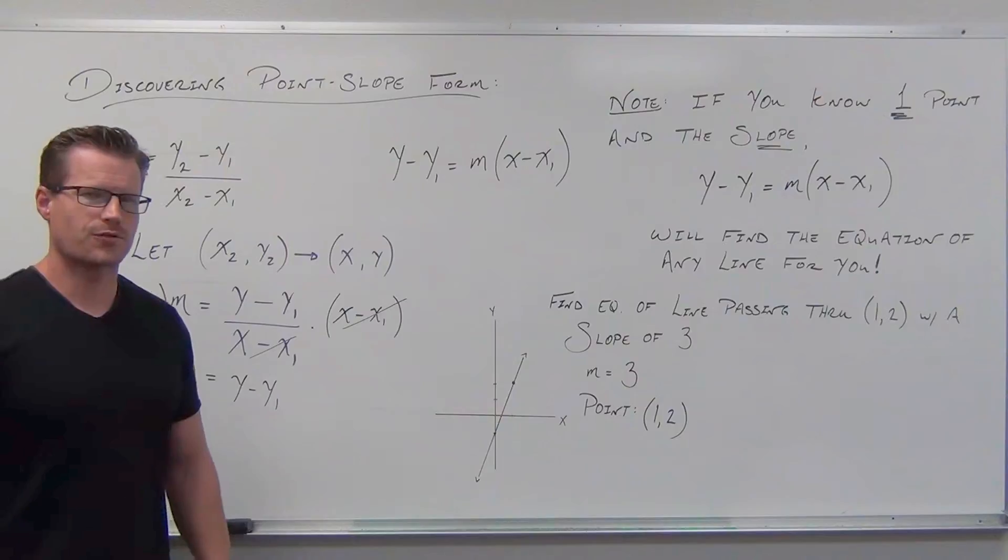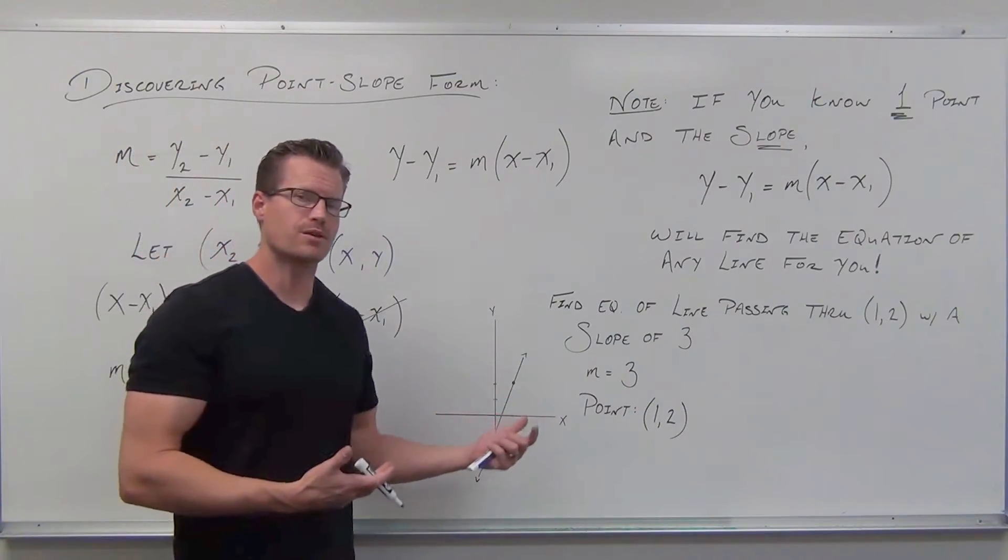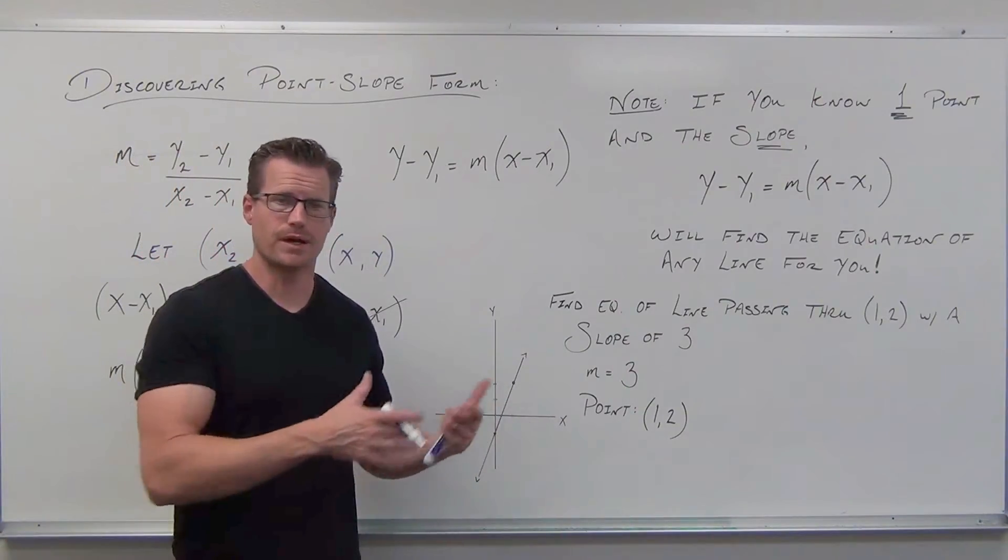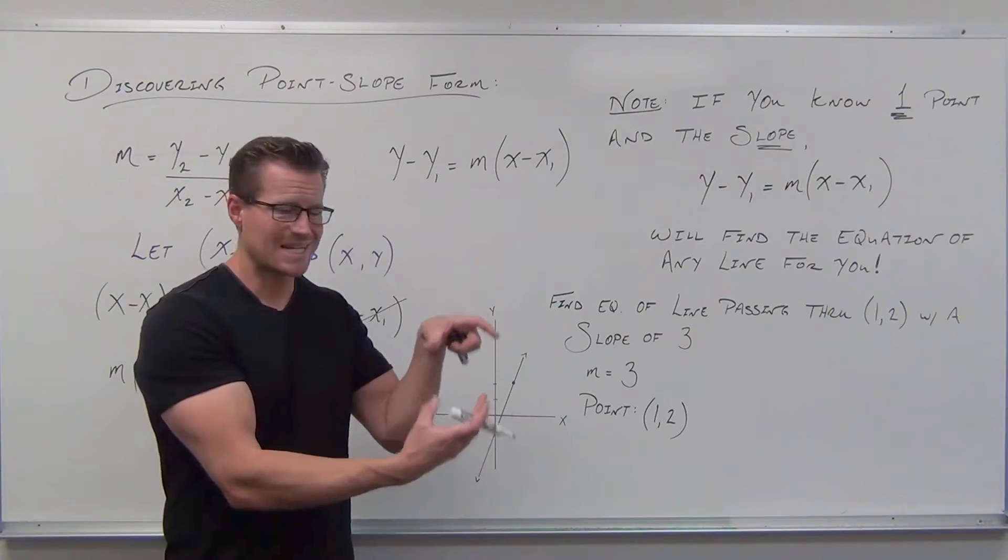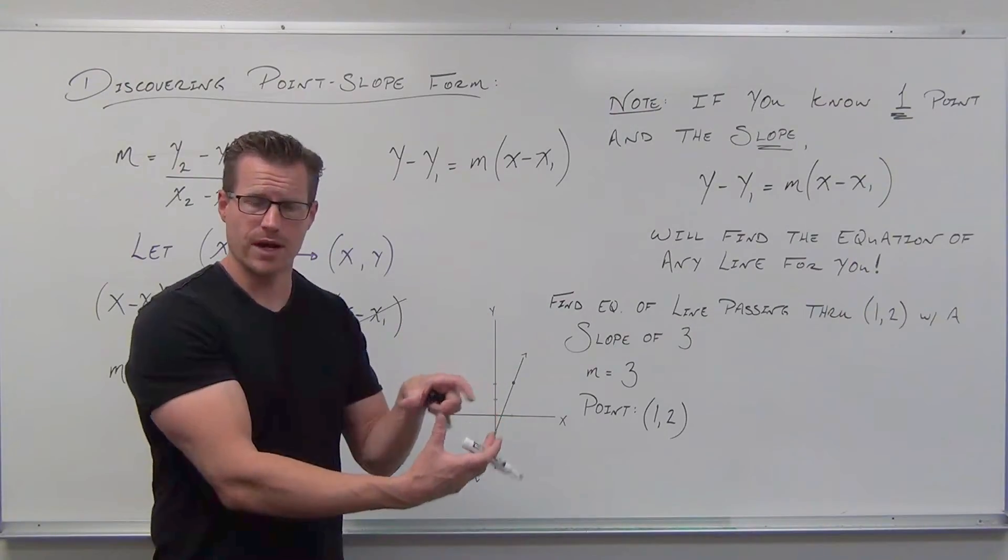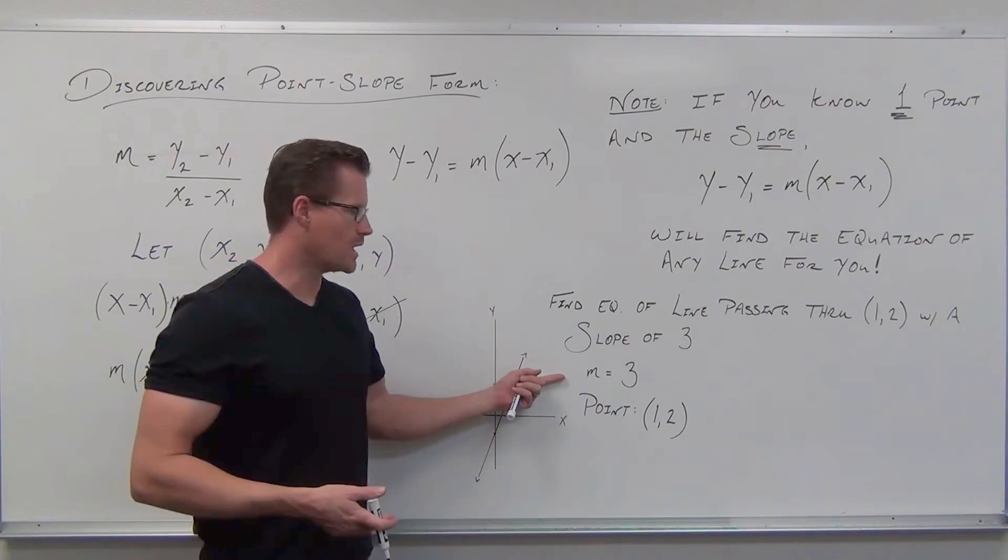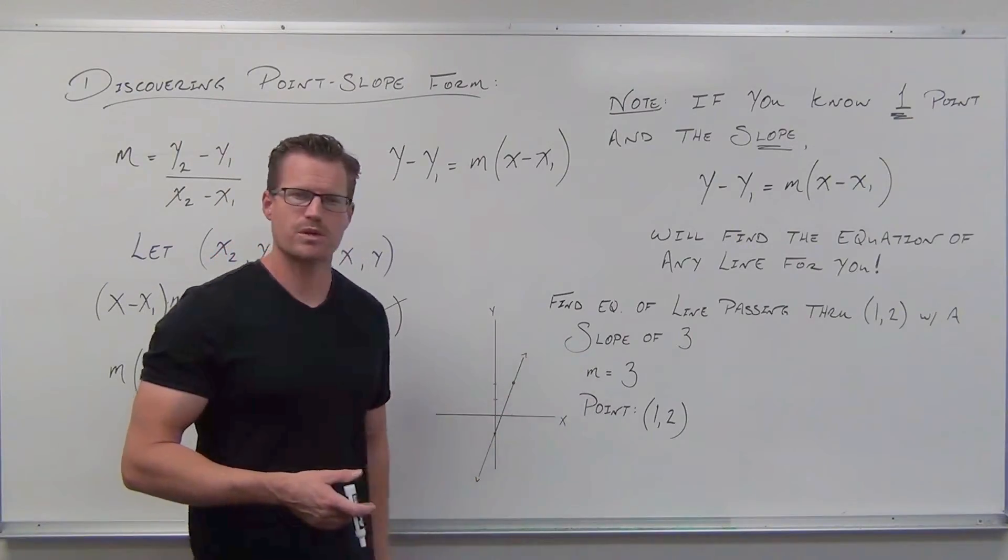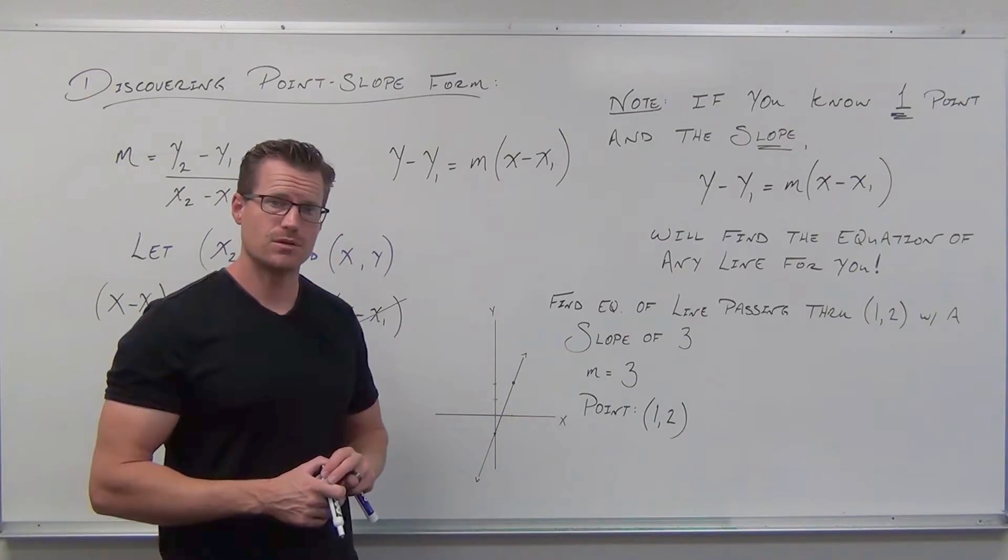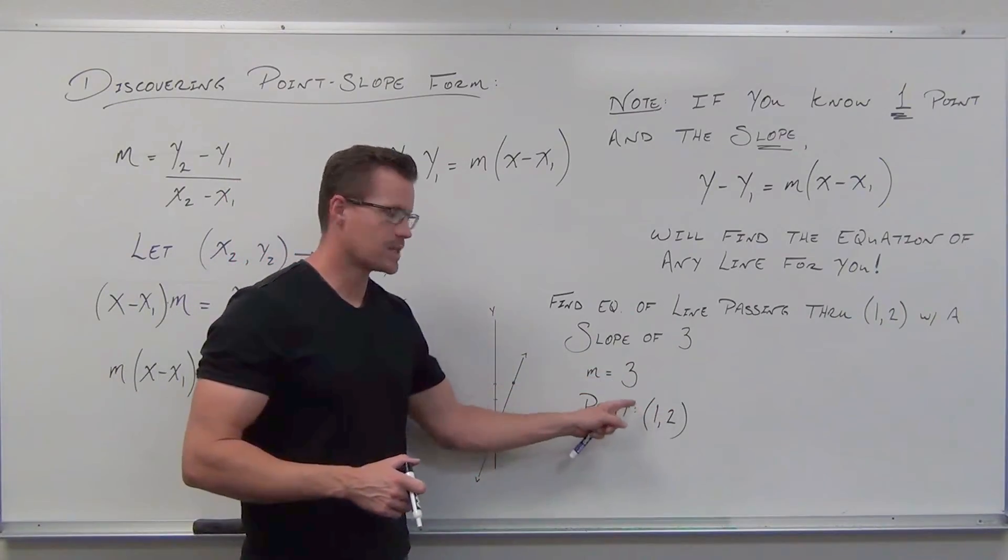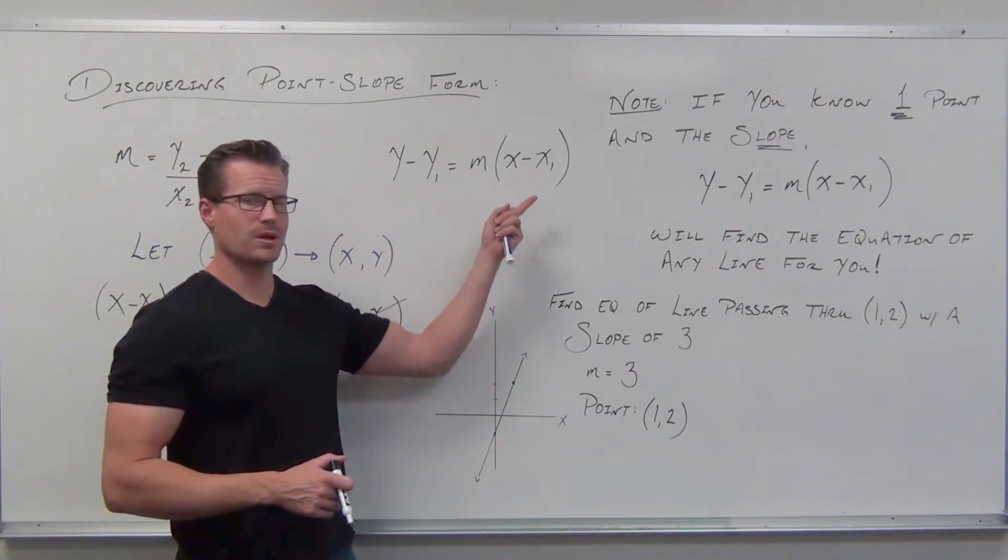I want you to write out what the slope is. You don't even need to write it as a fraction. I'm not really interested in graphing right now. All I'm interested in is finding the equation. So our slope is three, no problem. Our m is three. Our point is one, two. All we have to do is understand where these three numbers fit in that formula.